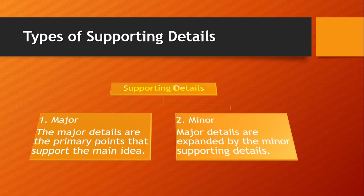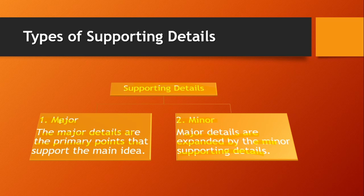Dear friends, let's talk more about the supporting details. We have two types of supporting details: major supporting details and minor supporting details. The major details are the primary points that support the main idea. The minor details expand on the major details. So the main idea is supported by major supporting details, and major supporting details are supported by minor supporting details. An important reading skill is the ability to find these major details and separate them from the minor details.